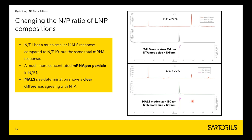Including size determination as well, we determined a MALS mode size of 114 nanometers versus NTA of 105 nanometers for the N:P of 10 formulation, and 130 nm by MALS and NTA of 120 nanometers for N:P of 1. You can see the difference in size. The MALS response is much lower in the N:P of 1 case compared to N:P of 10. We can estimate the loading of mRNA per particle — in this case, there is less encapsulated mRNA but also much less MALS response, and we can estimate the loading is about three times more mRNA per particle in the N:P of 10 ratio.